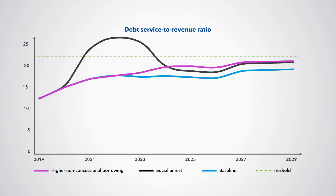In the figure, the higher non-concessional loans scenario does not show a breach of the debt burden threshold over the projection period. However, under the social unrest scenario, there is a significant rise in the debt service-to-revenue ratio that results in a breach of its threshold, which in turn reveals debt vulnerabilities to a country-specific risk.